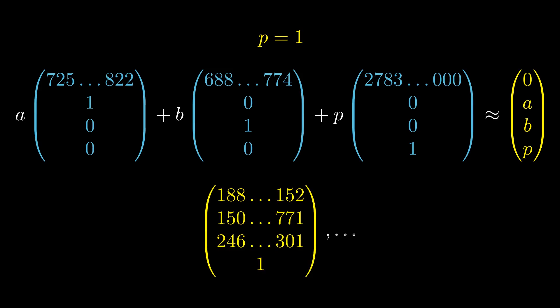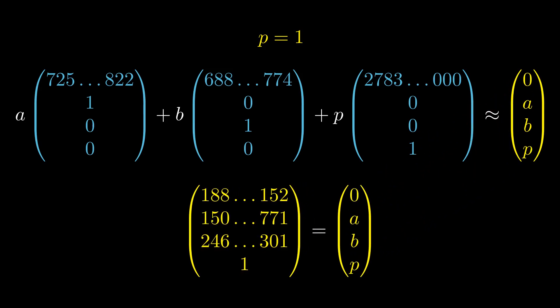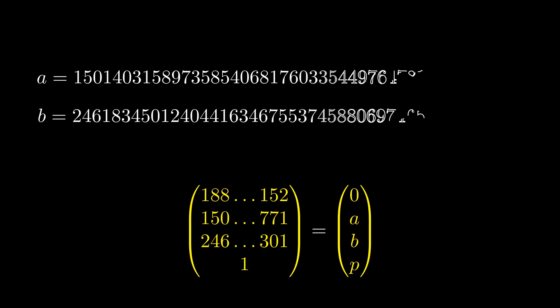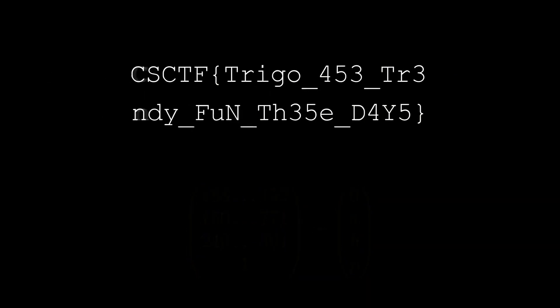Applying LLL gives a resulting basis. Filter the vectors for those where the last entry is 1, since we need p = 1. The first entry isn't exactly zero because of the approximate multiplication by 10^300, but that entry is only about 45 digits — insignificant compared to the 300-digit scale. You don't even need to judge whether it's insignificant enough; just check whether you've found the actual flag. Extract a and b from this vector, convert them to characters, and you get the flag.